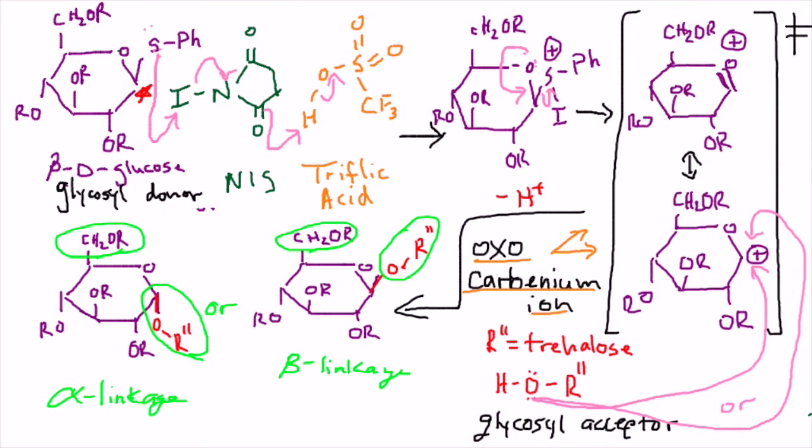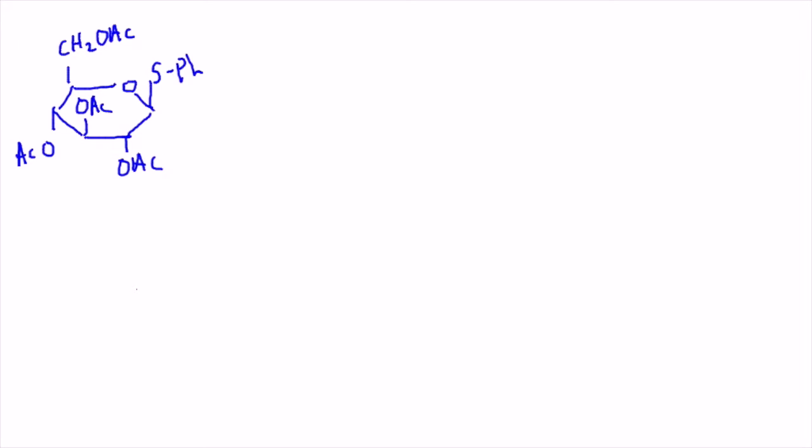Now, depending on what type of protecting group you have on the hydroxyl groups, this is going to influence the predominance of one linkage over the other in a glycosylation. Now, notice we have that same beta-D-glucose with a thiophenyl group, except the hydroxyl groups have an acetyl-protecting group on them.